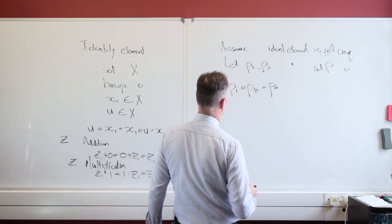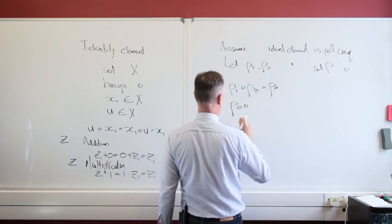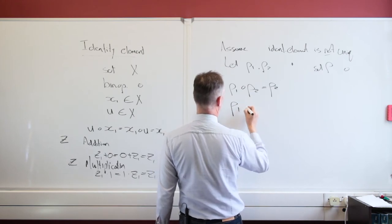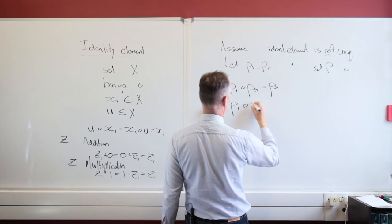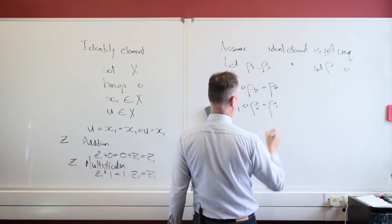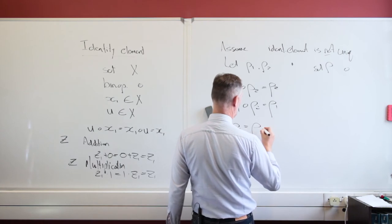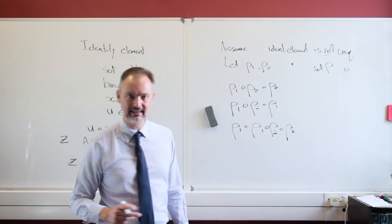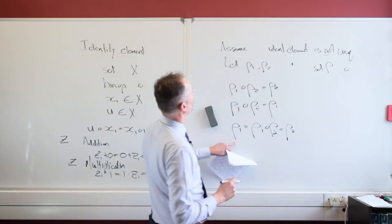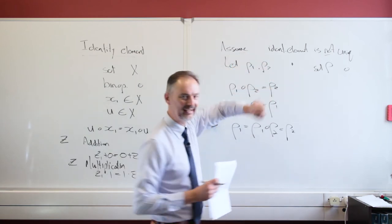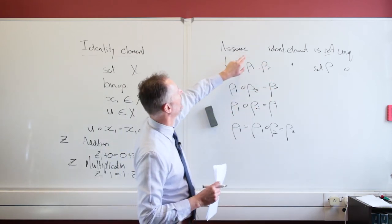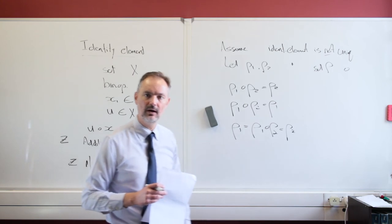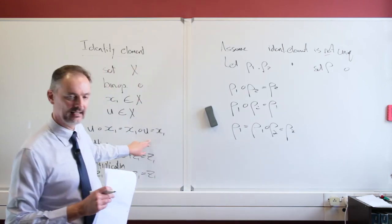But if I choose p₂ as my identity element, then using p₂ as identity with p₁, I'm going to get p₁ back. In other words, I have p₁ ⋆ p₂ = p₂ (when p₁ is the identity) and p₁ ⋆ p₂ = p₁ (when p₂ is the identity). In other words, p₂ equals p₁. That is in contradiction to my initial assumption. My initial assumption is therefore false. Therefore, the identity element, if it exists, is unique. So a nice proof of the uniqueness of an identity element, if it exists.